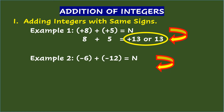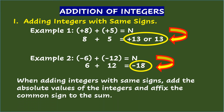Example 2: Negative 6 plus negative 12 equals n. The absolute value of negative 6 is 6, and the absolute value of negative 12 is 12. Adding the absolute values: 6 plus 12 is 18. Then affix the common sign to the sum, which is the negative sign. So negative 6 plus negative 12 equals negative 18. When adding integers with same signs, add the absolute values of the integers and affix the common sign to the sum.